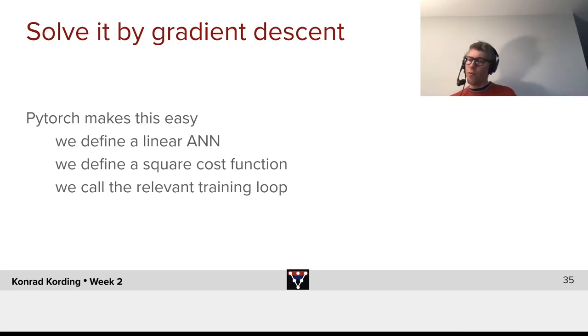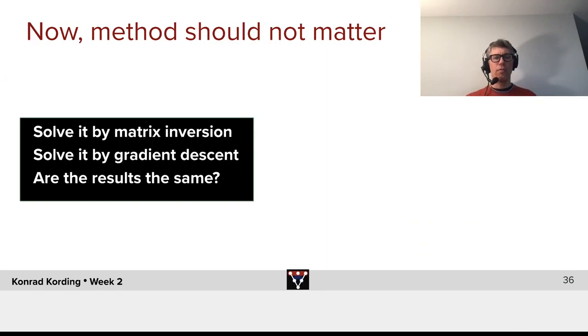So, there's different ways of solving it. Now, you can solve it by matrix inversion. Matrix inversion is relatively slow. Alternatively, you can solve it by gradient descent. And PyTorch makes this very easy. What do we need to do? We define a linear artificial neural network. We define a mean squared error cost function. And then, we call a relevant training loop. So, with the techniques that we now have at our disposal, we can solve linear regression very efficiently.